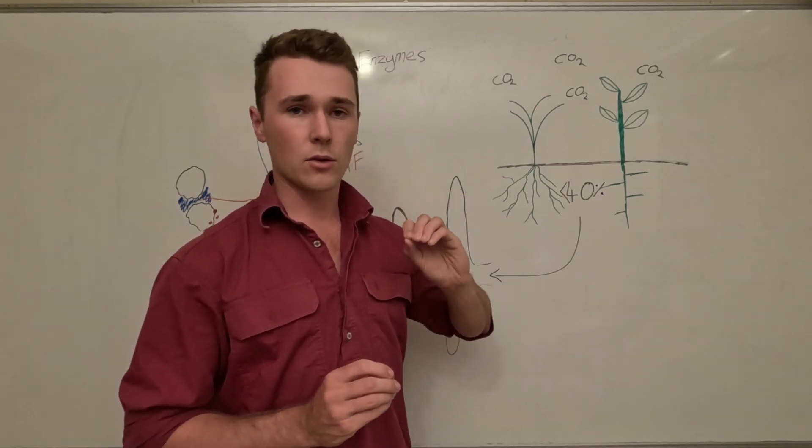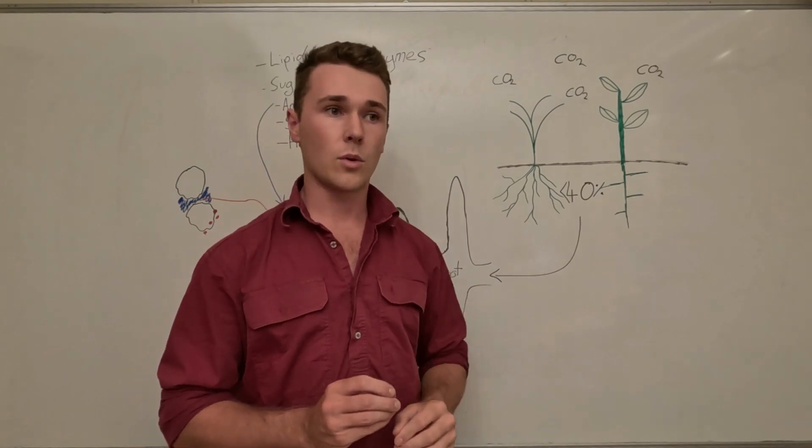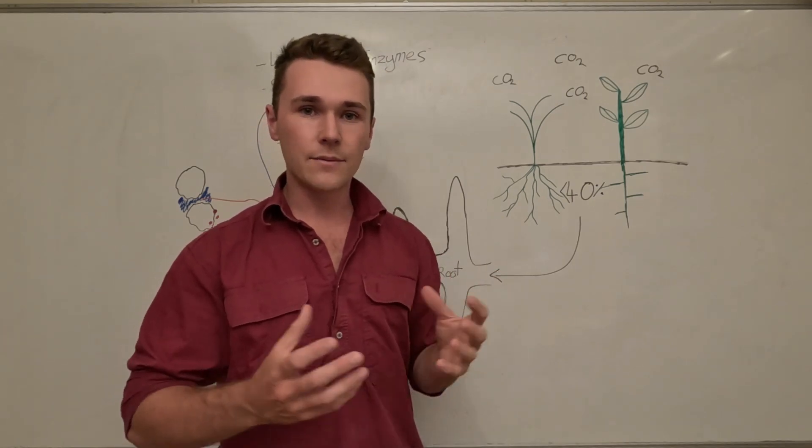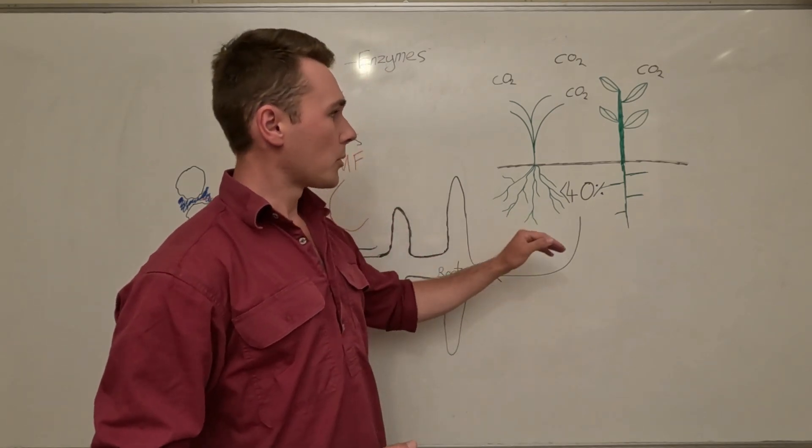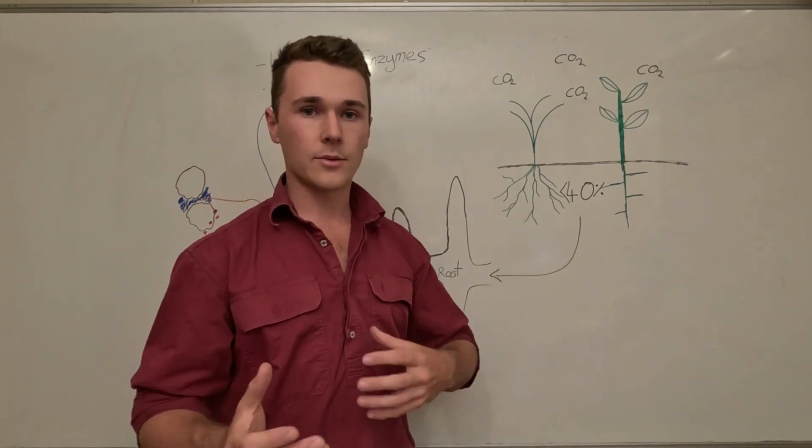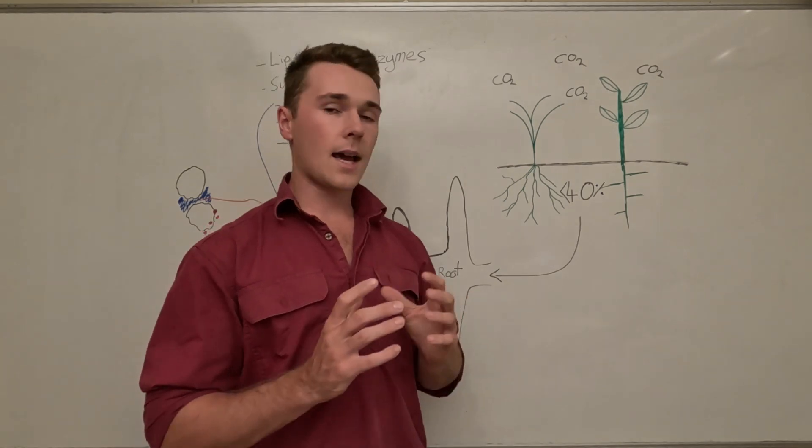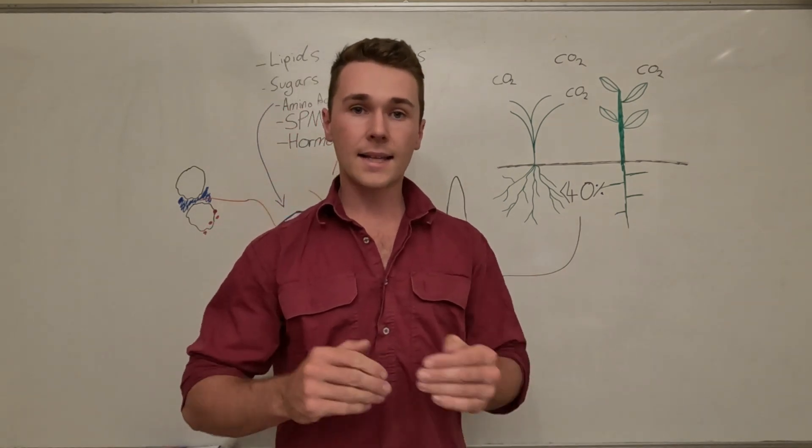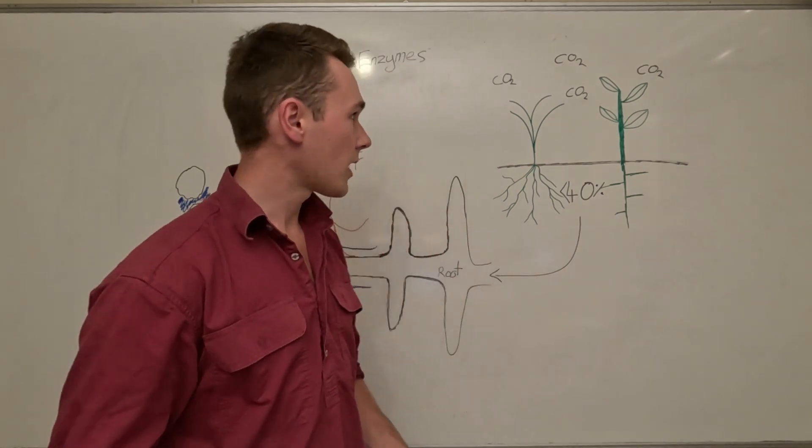Once those plants have the sugars, what do they do with them? Well effectively they can either put that towards growth, they can put that towards metabolism so actually just living, and they can also put that towards reproduction so flowers and fruit. The other area that they can put that is back into the soil via root exudates.